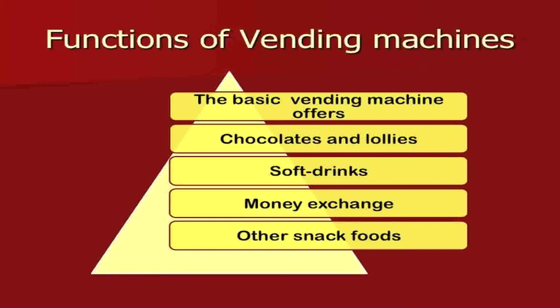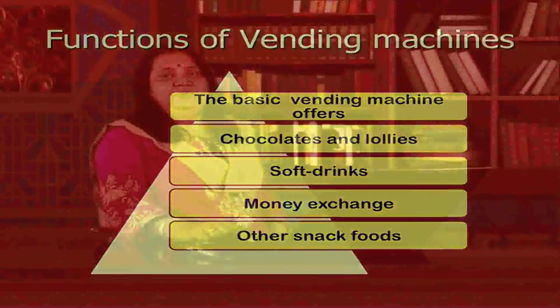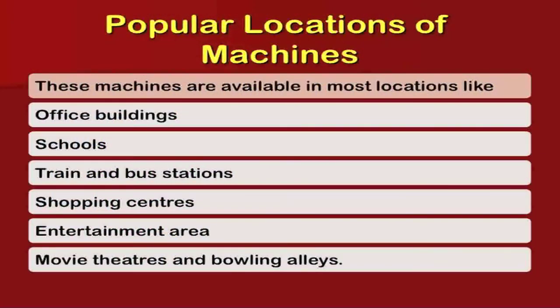The basic functions of a vending machine are to offer chocolates, lollies, soft drinks, other snacks, money, and exchange. Most stations offer these basic services — water, cold drinks, snacks, and chocolates — through vending machines. Even currency exchange is done through ATM machines, giving great comfort to customers.